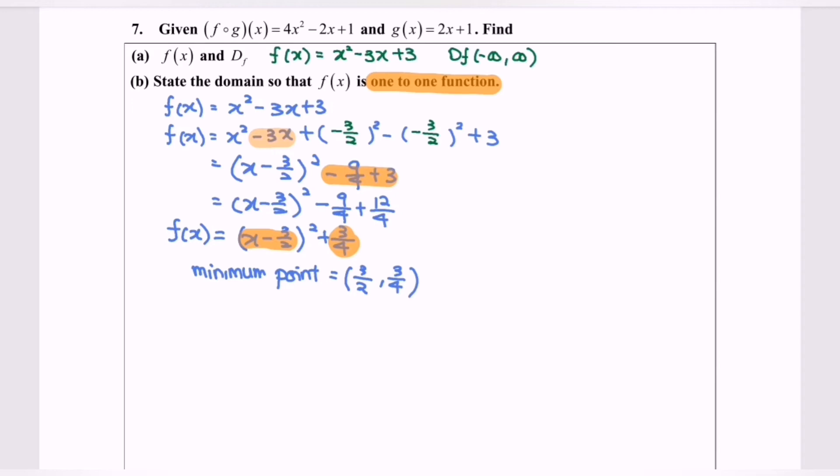So based on this situation, x equals 3 over 2 is our symmetry axis and this would be our range for the function.